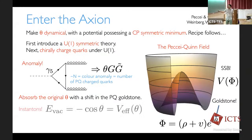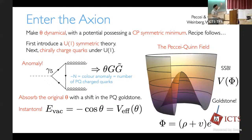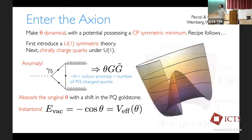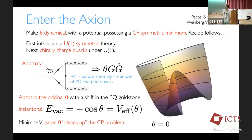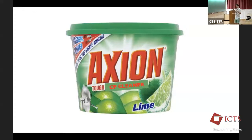The instantons of QCD introduce a vacuum energy that depends on the value of theta. If theta is a constant, it doesn't matter — but once it becomes a pseudo-Goldstone boson, there's a dynamical way to send theta to zero and minimize the energy. The axion is named after the laundry detergent Axion in America — it's related to an axial symmetry, it's a boson, it cleans up the strong CP problem.